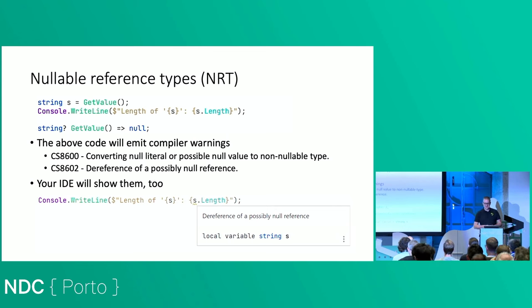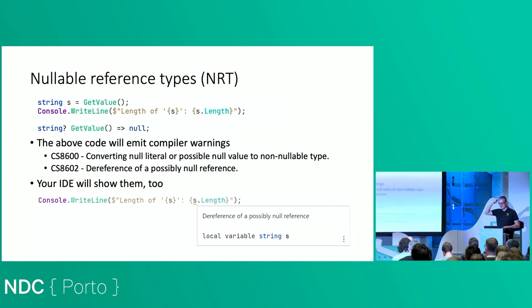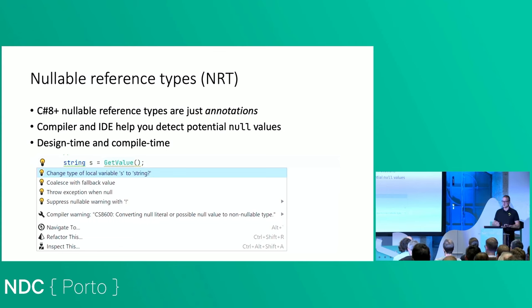The code is going to show some compiler warnings — actually a couple. The first is on the string s = getValue() assignment, saying you're taking a potential null value and putting it into a non-annotated string. The next one is on s.Length — the compiler will say this is potentially null, you should fix this and do a null check. Your IDE — Visual Studio, Rider, or ReSharper — will also pop up warnings saying this can potentially be null and you should look into it.